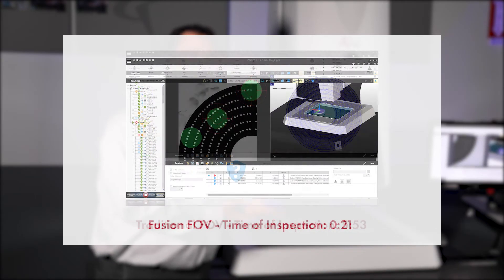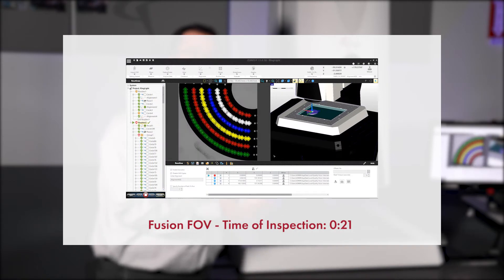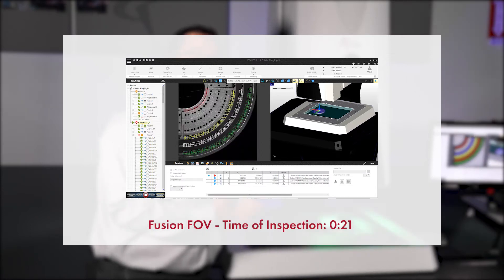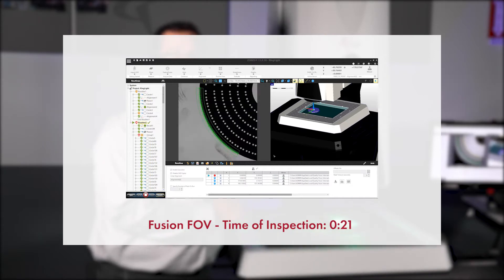So we are increasing throughput of up to tenfold of what we normally could do on a small field of view system while still including the high accuracy telecentric optics that OGP offers on our Fusion systems.